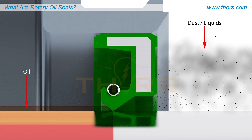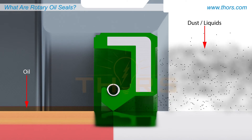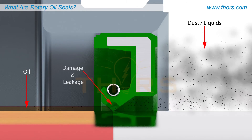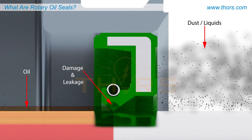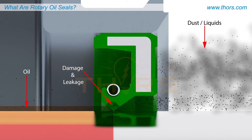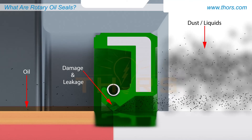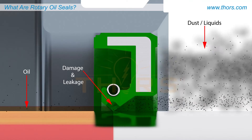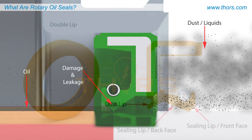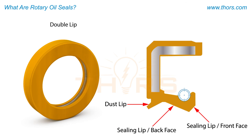As the shaft rapidly rotates in service, a properly functioning seal will keep the oil inside of the housing and keep dust, liquids, and other particles out. If the lip was damaged, oil will leak between the shaft and the lip, and unwanted particles will access the working components inside.